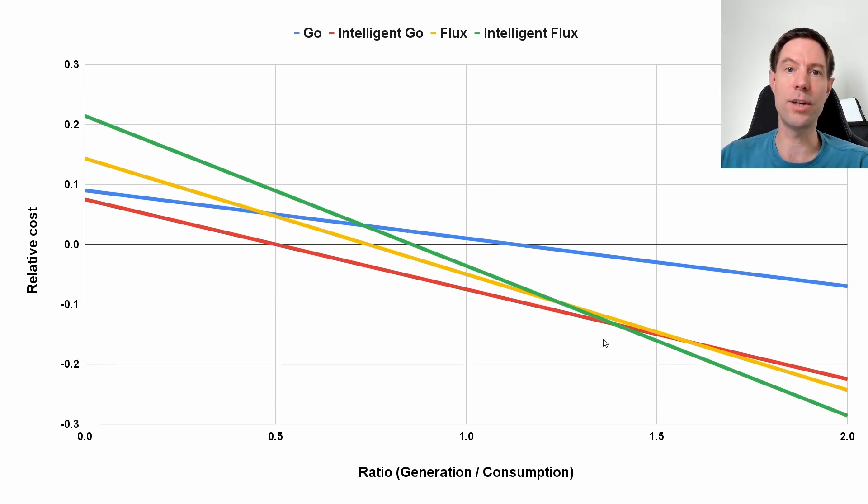But just as a brief summary, I'm assuming that essentially all of your generation gets exported out to the grid so you're going to receive income from that based on the best export tariff you can get for any one of these particular tariffs. So in the case of Intelligent Go, you can get 15 pence per kilowatt hour. For regular Go, you'd only get 8 pence per kilowatt hour because you can only get the outgoing light tariff. For Intelligent Flux and Flux, they have their own export tariffs.